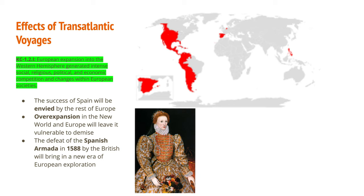European expansion into the Western Hemisphere generated intense social, religious, political, and economic competition and changes within European societies. The Spanish dominated New World exploration for the majority of the 1500s and expanded greatly, as shown on the map. But that overexpansion became part of their demise — other European countries saw how successful they had been and the riches they were getting. The overexpansion made it hard to defend their position in all those territories. In 1588, the Spanish Armada was defeated by the British, leading to a new age of European exploration in which the British began planting colonies in the New World.